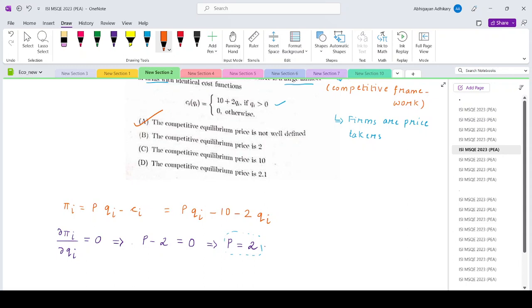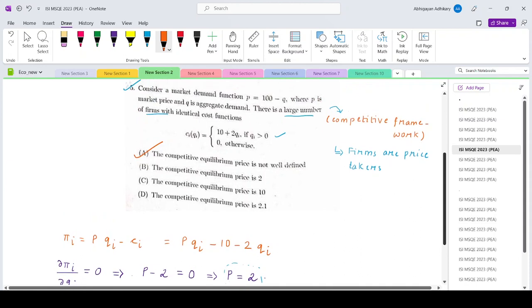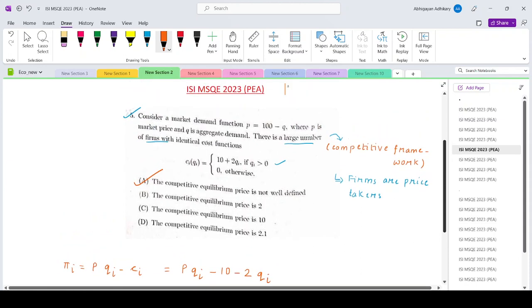So this basically gives you your option as option A, because the comparative price is not well defined in this case.